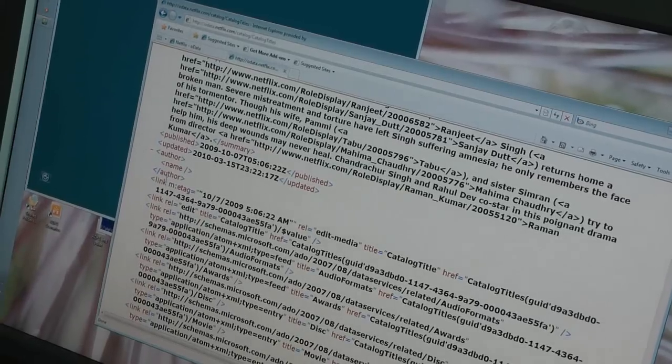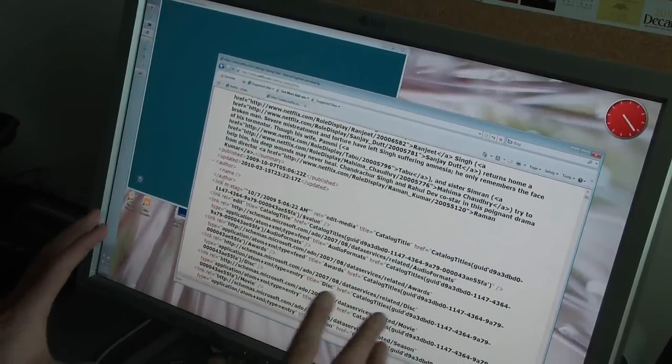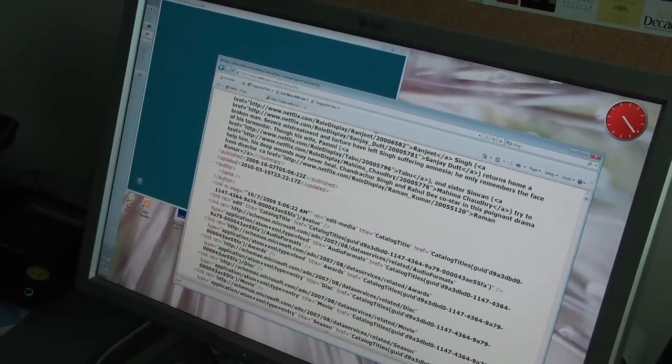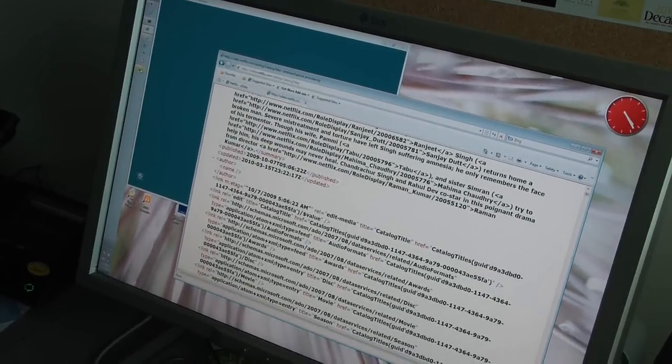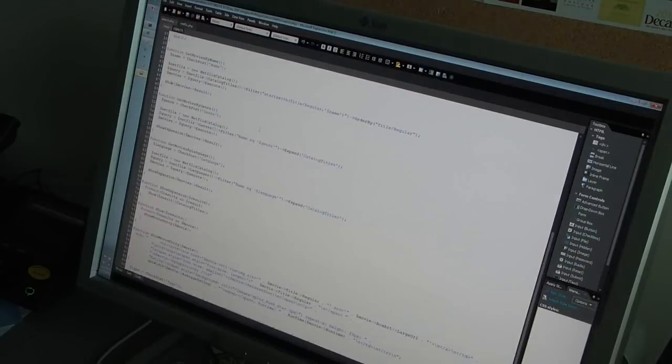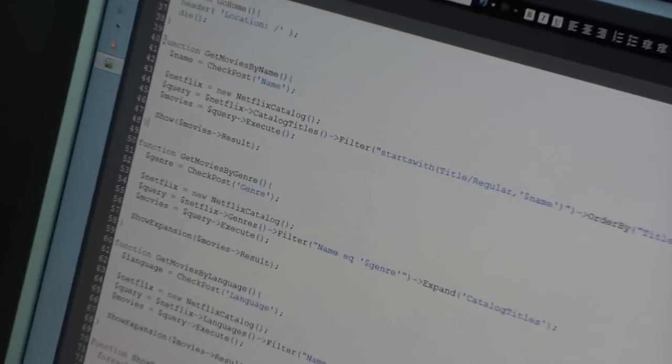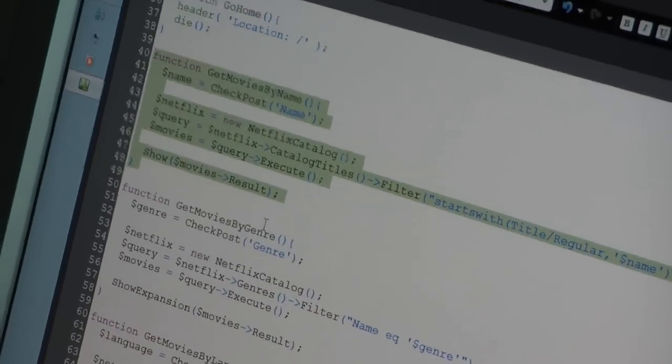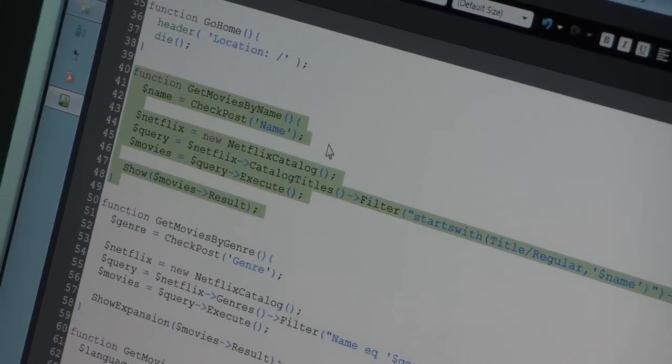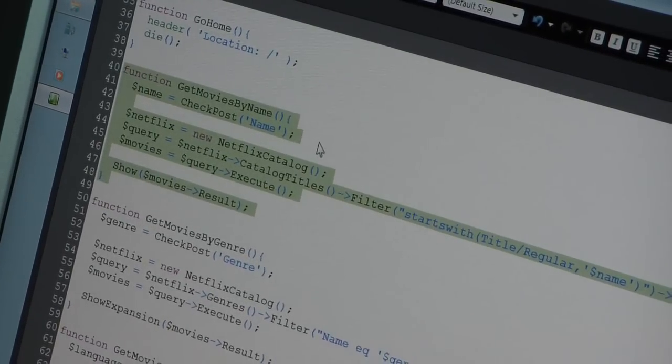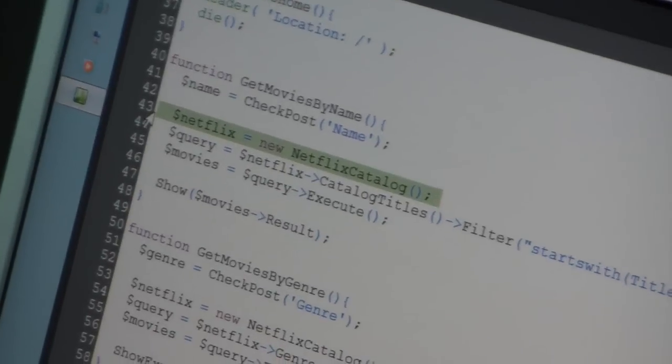What the ADO.NET SDK does is we have a built-in tool that basically takes this data, this metadata exposed by the OData service, and builds what we call a client-side proxy library that I can use in order to write my application. Here you see an example. Before we were looking at the Netflix application. Here is an example on how I can filter, I can search for movies with a specific title.